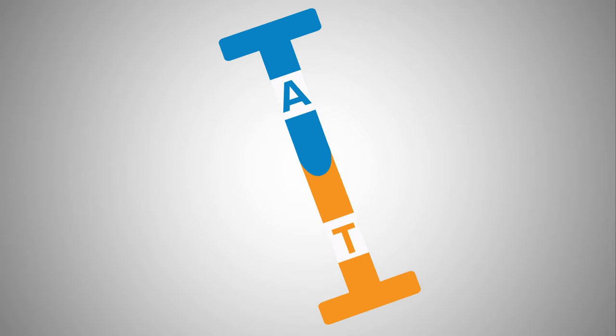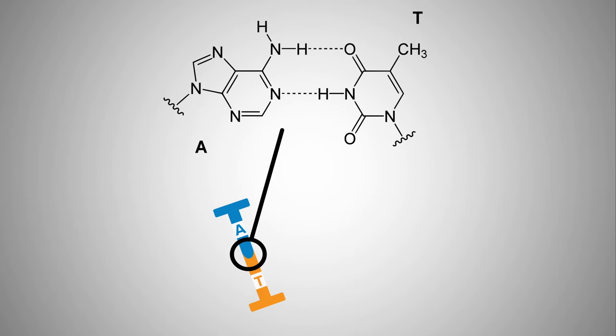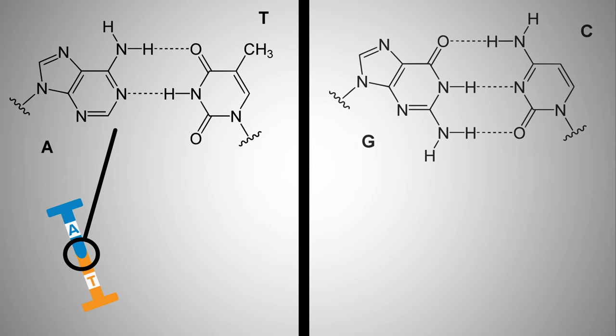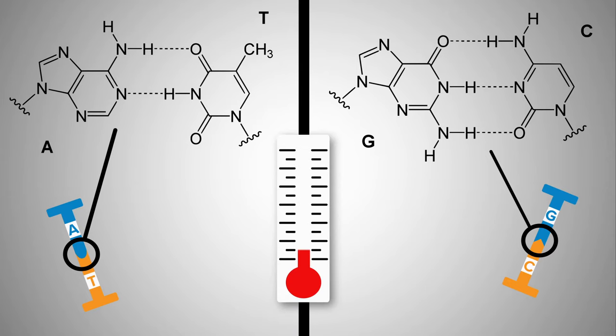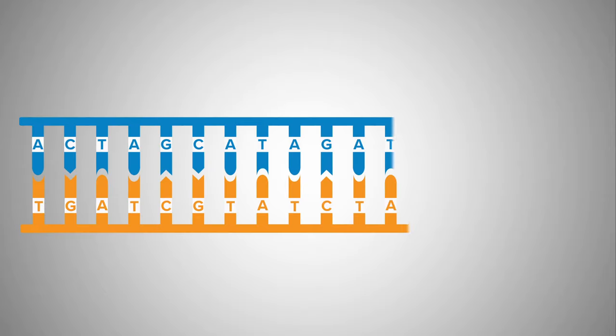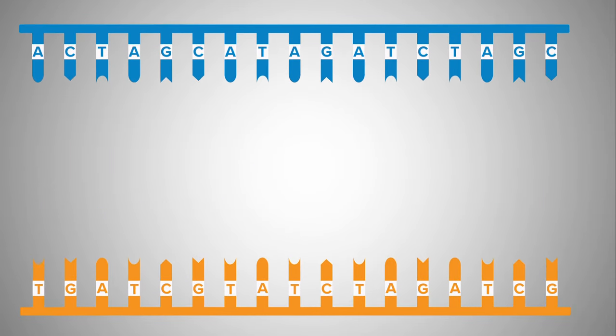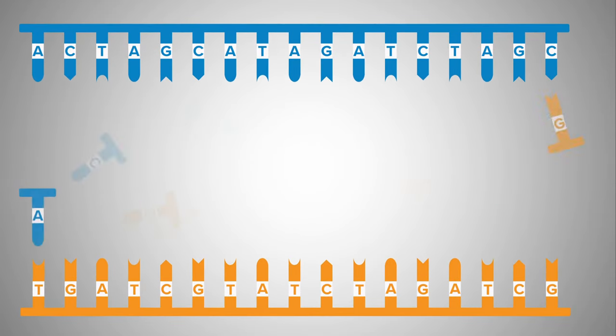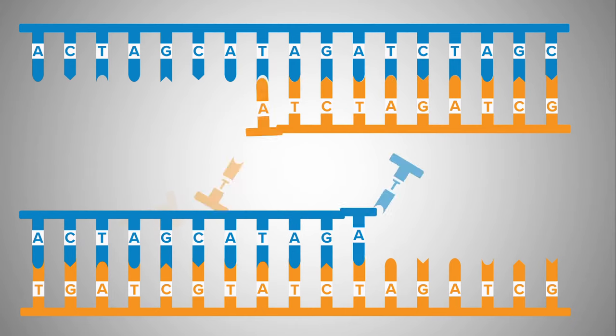Ori sequences are generally rich in adenine and thymine. AT base pairs are held together with just two hydrogen bonds, as opposed to the three hydrogen bonds that keep guanine and cytosine base pairs together. This means that AT base pairs separate more readily than GC base pairs. As the pairs break apart, it gives the replication machinery room to move in and get down to business, making copies.